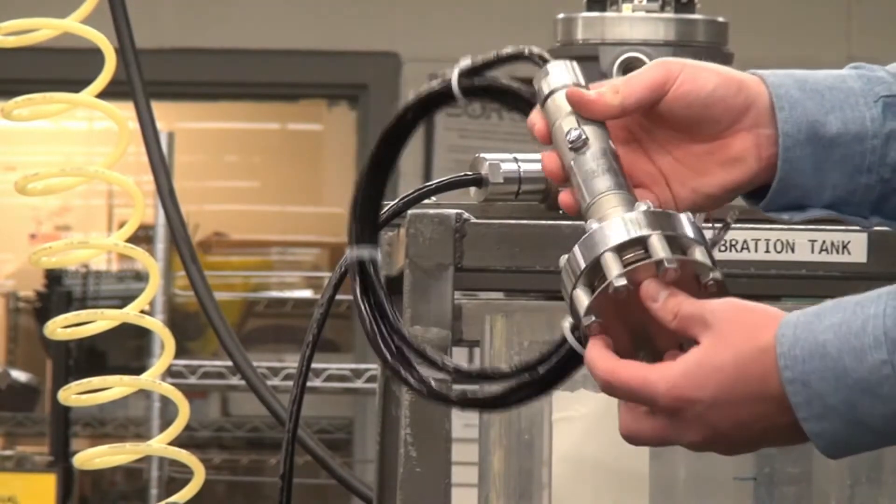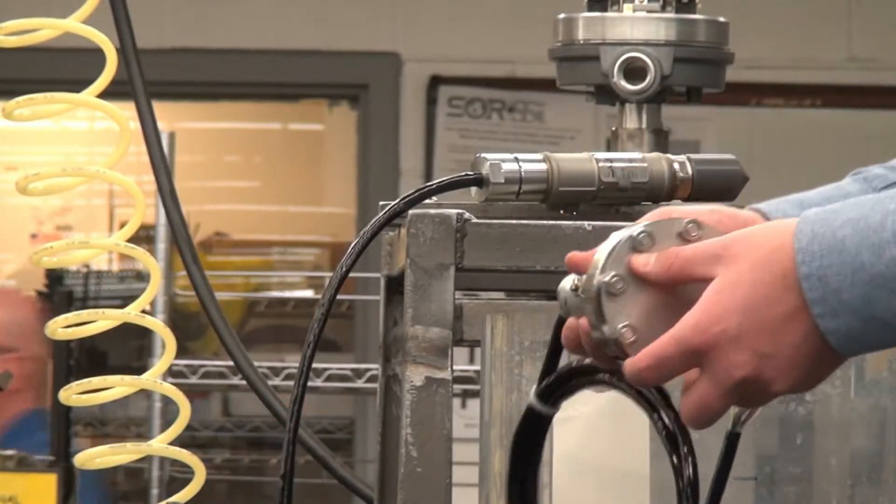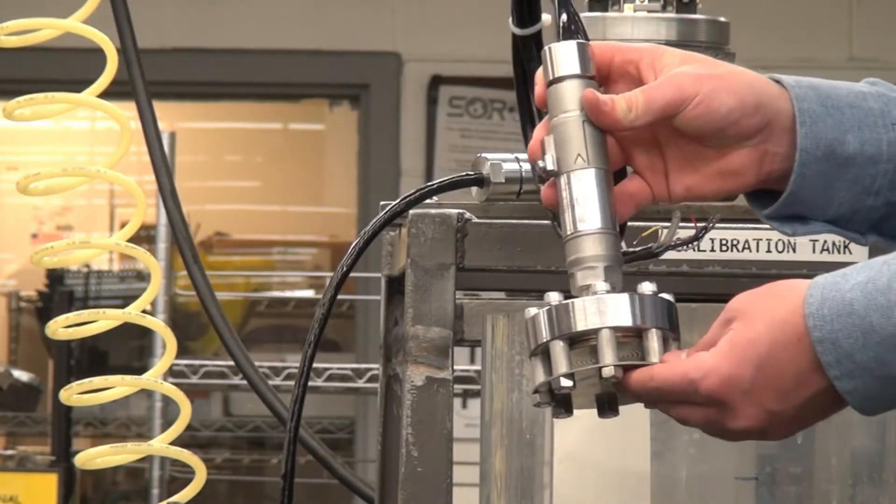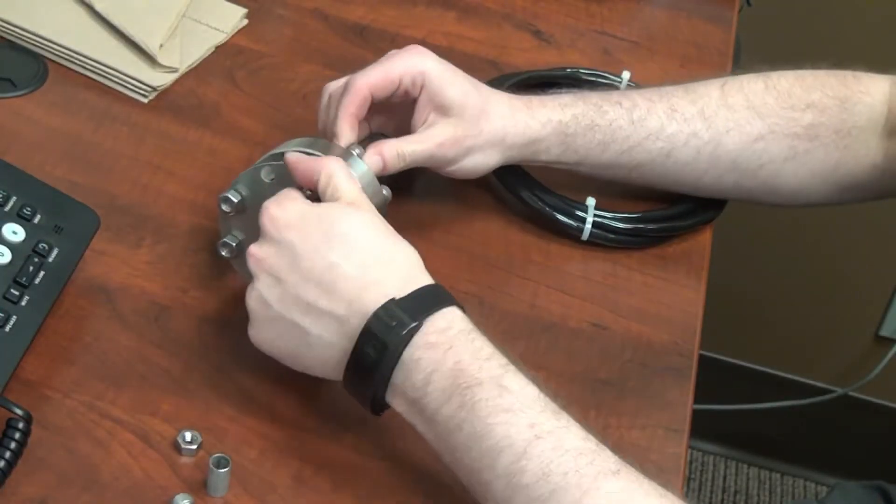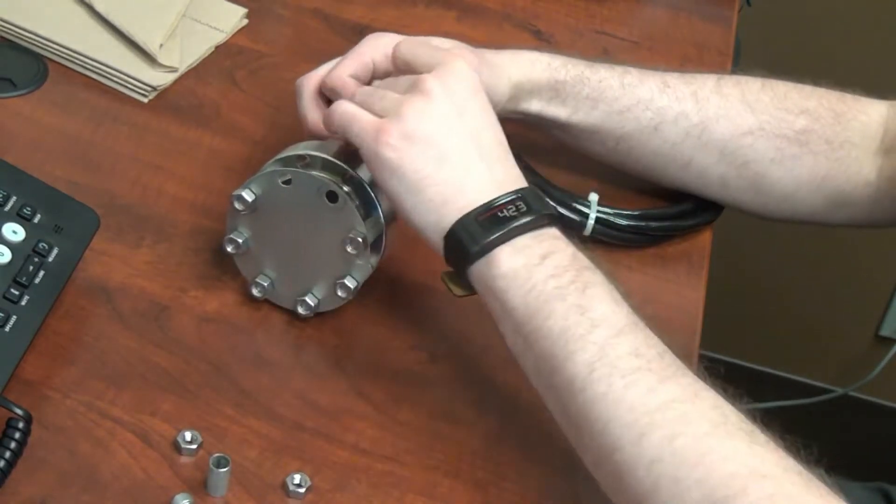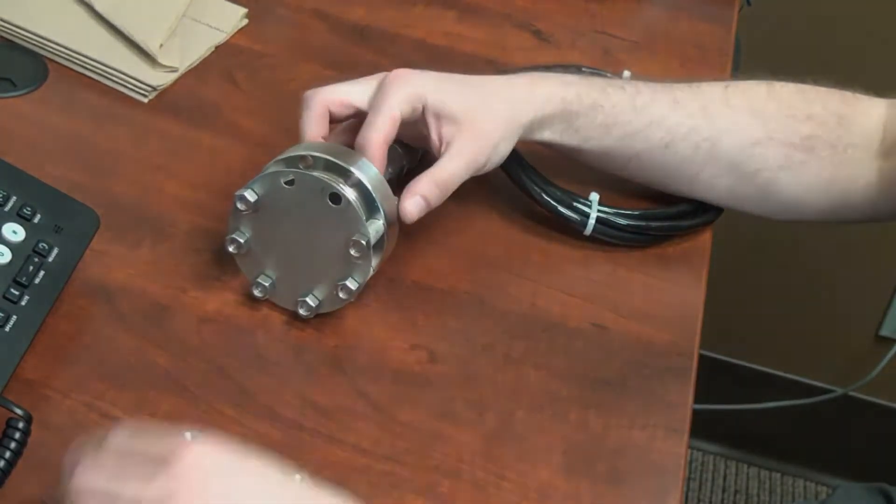It also incorporates the cage assembly to protect it from anything that could potentially damage the face of the sensor while it is in service. The cage assembly is easily removable via the nuts here so you can take it off and clean the face of the diaphragm seal.